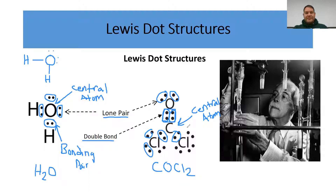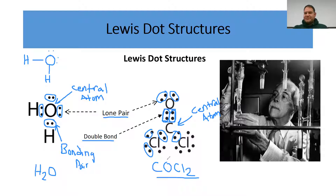You now get the opportunity to learn how to take a chemical formula and from scratch draw the Lewis Dot Structure for any molecule. So how do we do this?